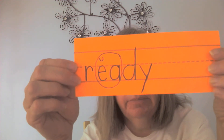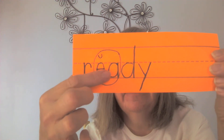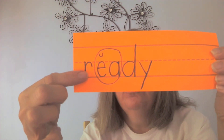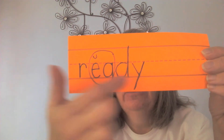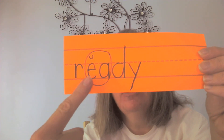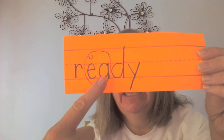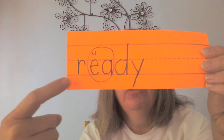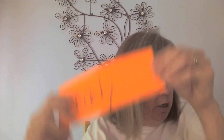Let's practice the other word — what's this one? Remember, this says EA as /ĕ/ in 'thread.' Ready. Let's spell it one more time: R-E-A-D-Y. Ready. Good job.